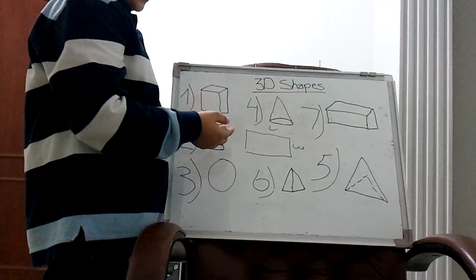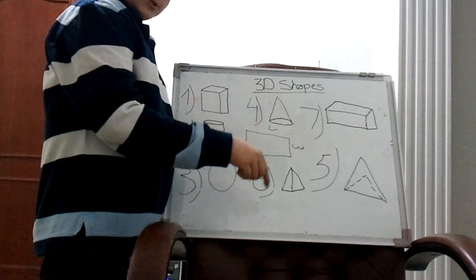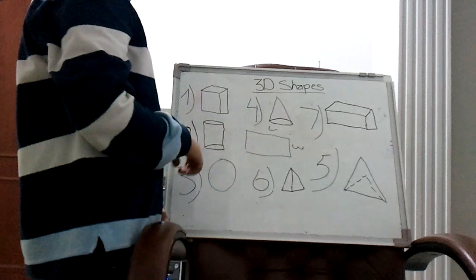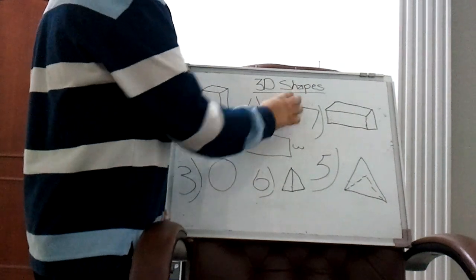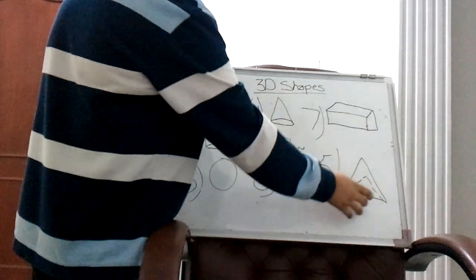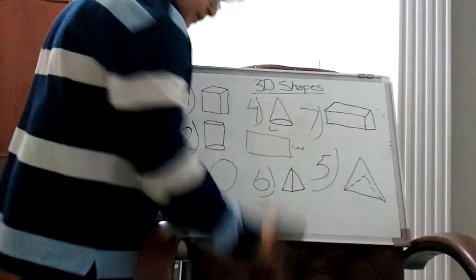So here is cylinder, here is sphere, here is cone, triangle-based pyramid, square-based pyramid, cuboid. So here is a cuboid, an example.